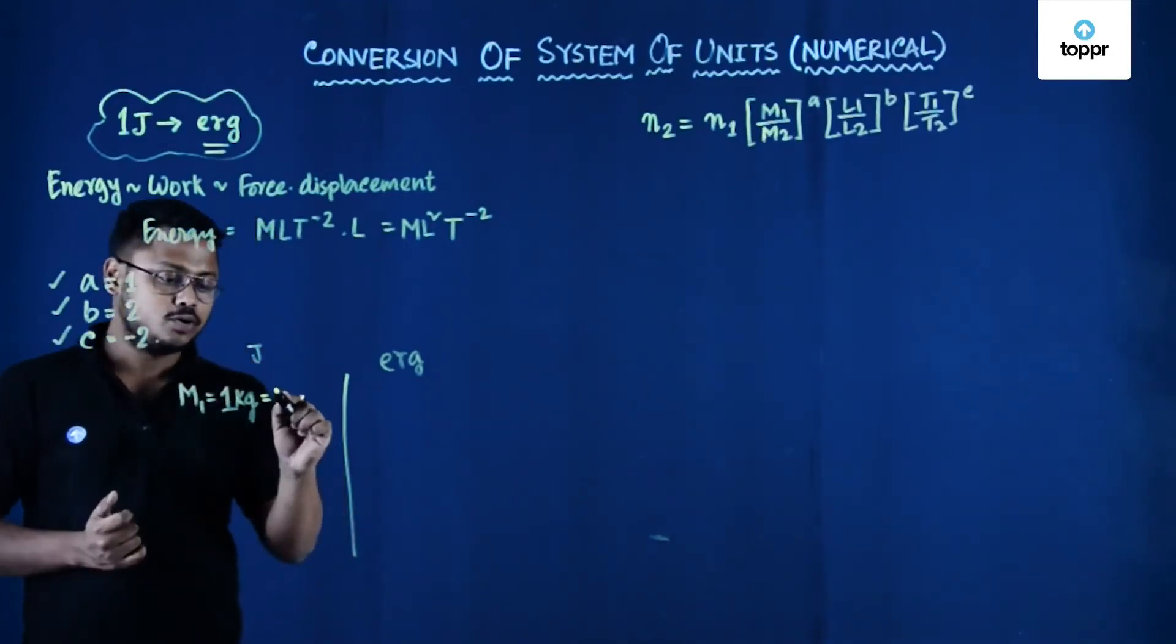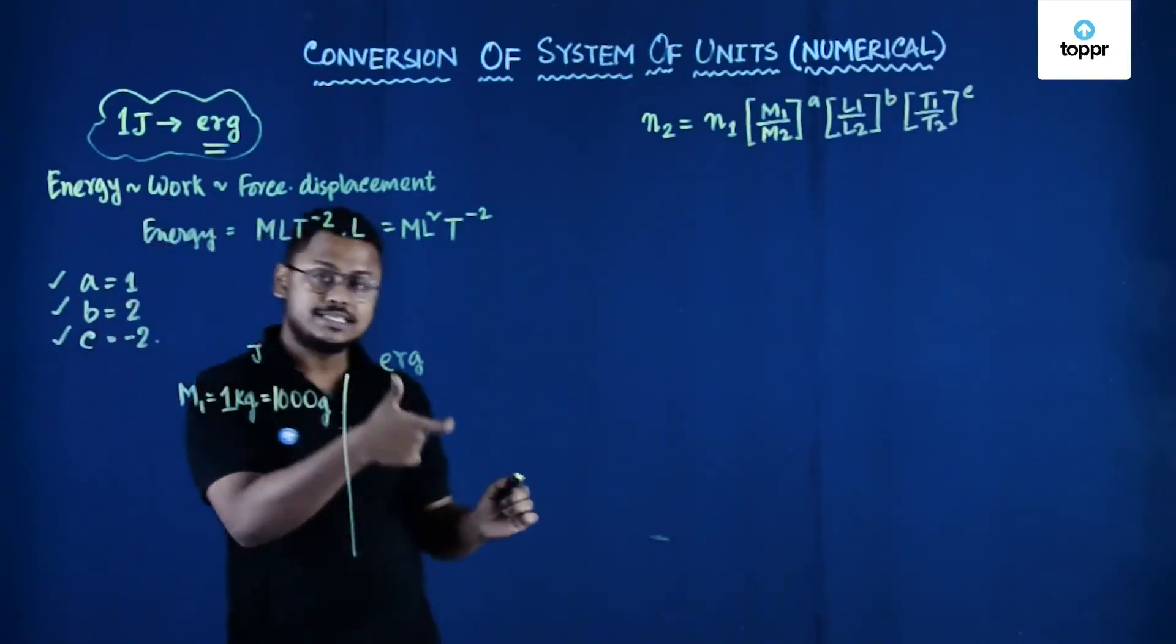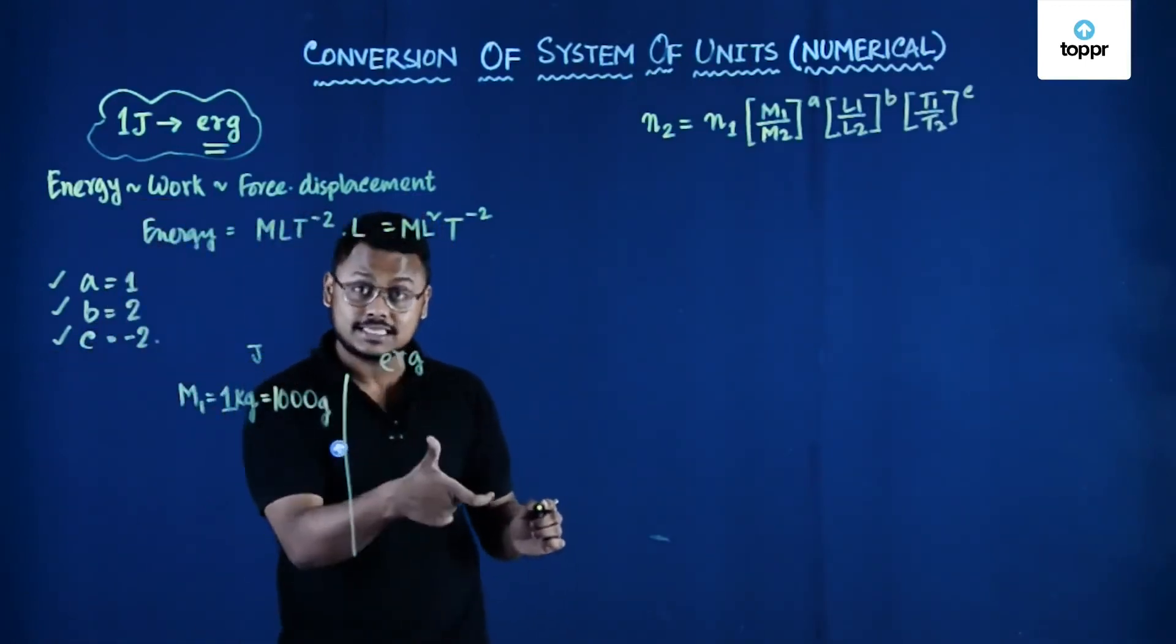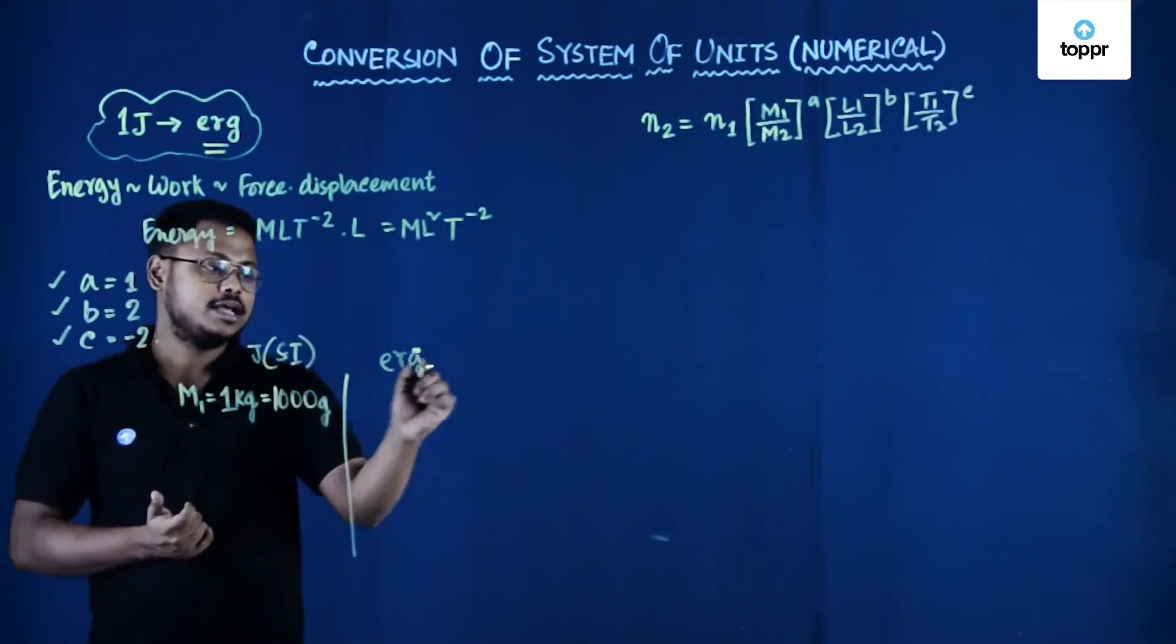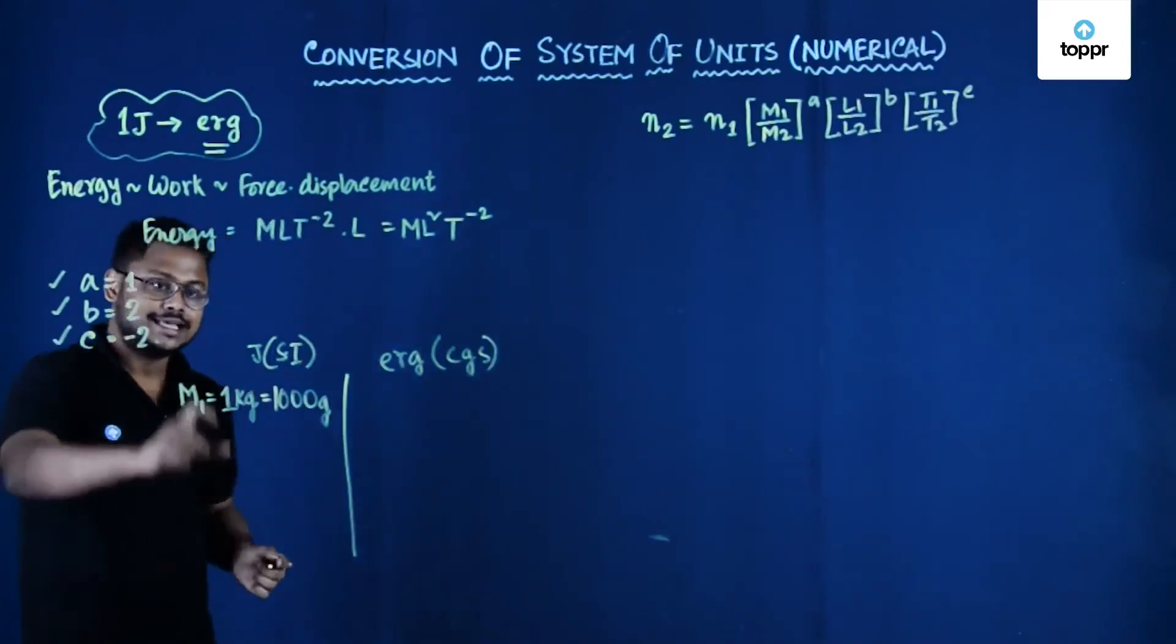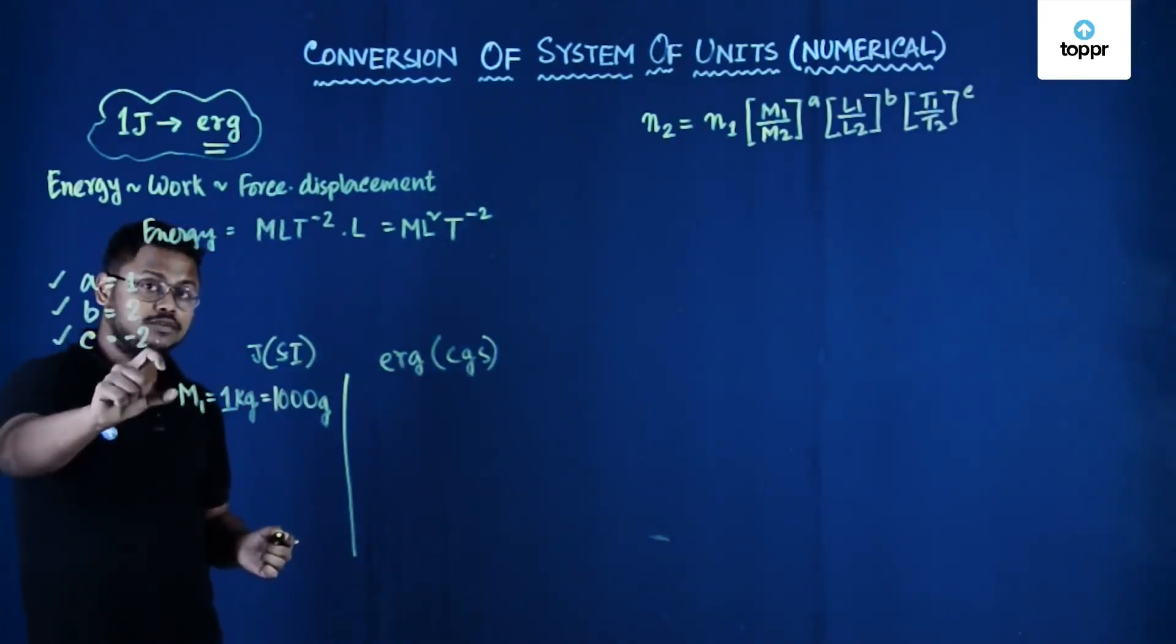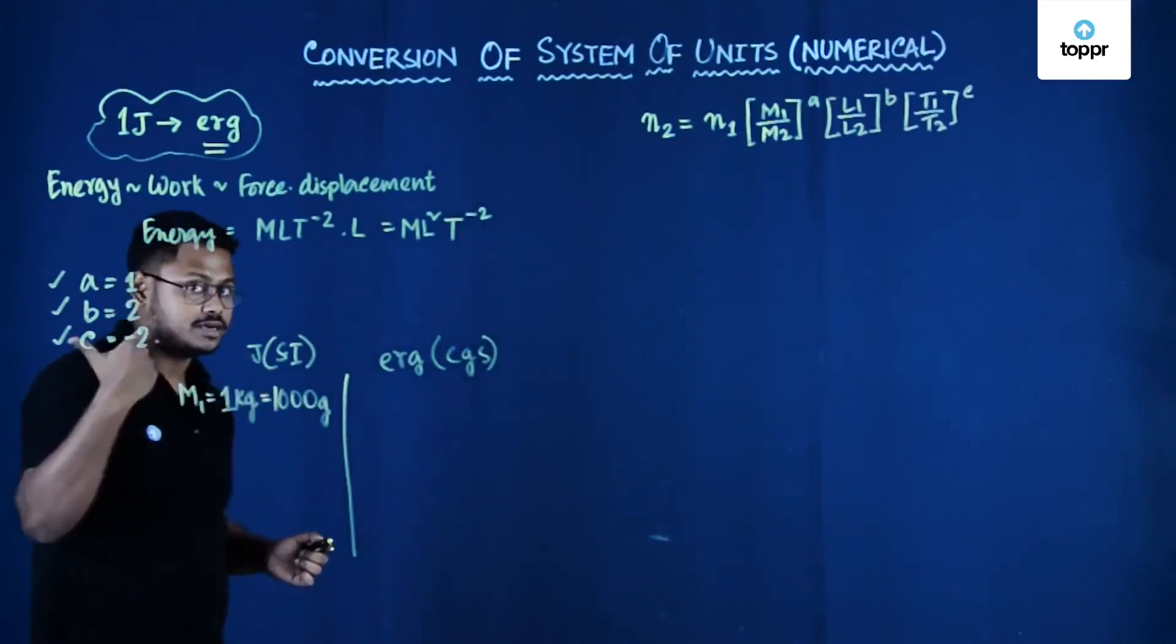So this must be equal to 1000 g in new system of unit because this is CGS and this is SI. So joule is in SI system of unit and this is in CGS system of unit. So in SI system of unit, the magnitude of the fundamental quantity mass is 1 kg and that is 1000 g.